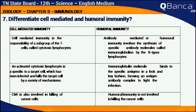Differentiate cell-mediated and humoral immunity. Cell-mediated immunity is the responsibility of a subgroup of T cells called cytotoxic lymphocytes. An activated cytotoxic lymphocyte is specific to a target cell which has been infected and kills the target cell by a variety of mechanisms. CMI is also involved in the killing of cancer cells.